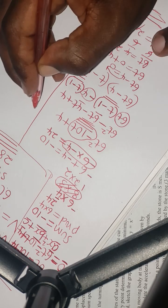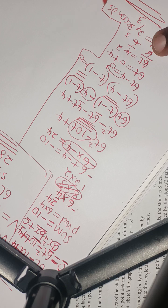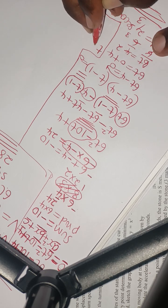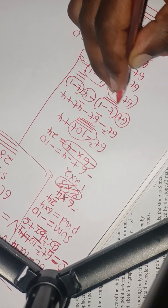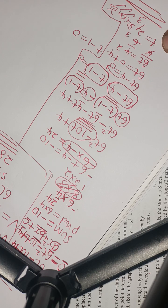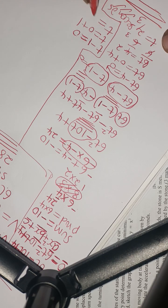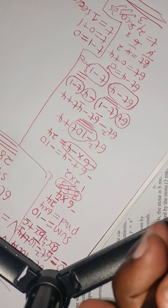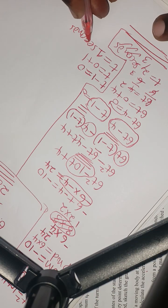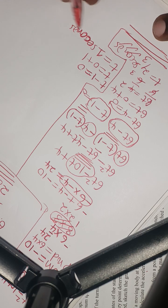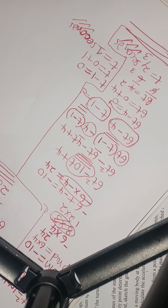Setting t − 1 = 0 gives t = 1 second. Therefore, the two values of t when the particle is momentarily at rest are t = 2/3 seconds or t = 1 second.